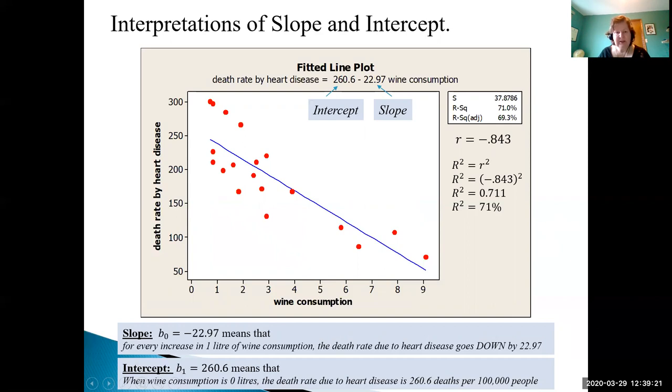Please just note here I've made a mistake. The b0 is supposed to be the intercept and the b1 is supposed to be the slope, sorry about that.